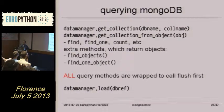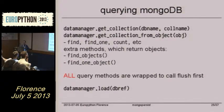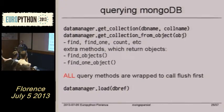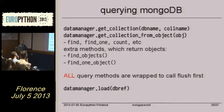We provide some extra methods. The previous find and find_one return dicts as usual for Mongo. We have a few extra methods — find_object and find_one_object — which will return real Python objects.